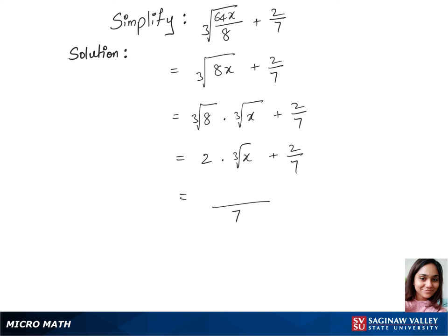The first part we have 2 times 7 which is 14 times cubic root of x plus 2. This is our final answer.